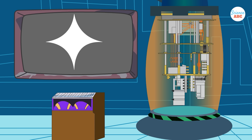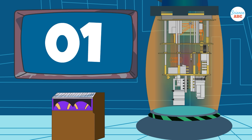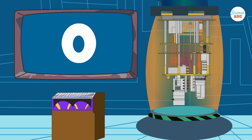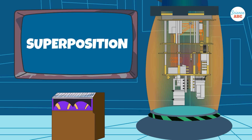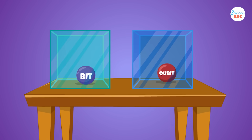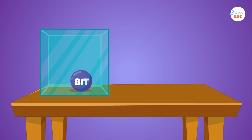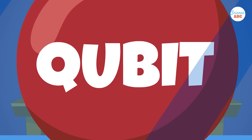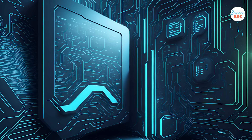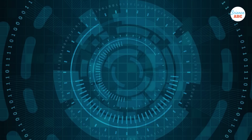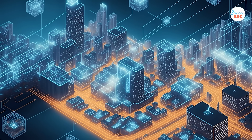Quantum computers, on the other hand, use qubits, which can exist in both states simultaneously — a property known as superposition. This unique ability of qubits opens up a world of possibilities, allowing quantum computers to process information in a fundamentally different way than binary bits and potentially revolutionize the future of technology.